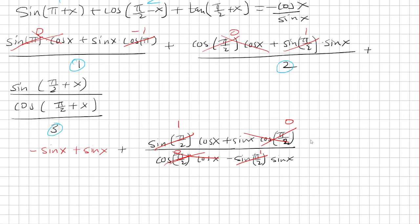And also note that negative sine plus sine cancels out. So I'm left with 1 times cosine is cosine, and then negative 1 times sine is negative sine. And so this is equal to negative cosine over sine. And that proves the identity.